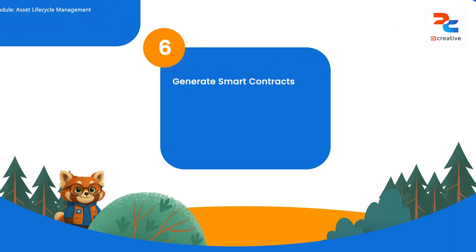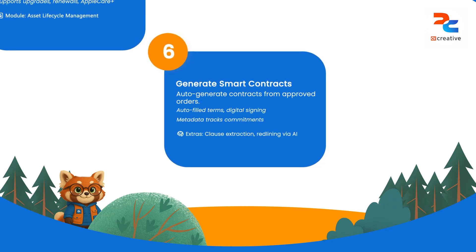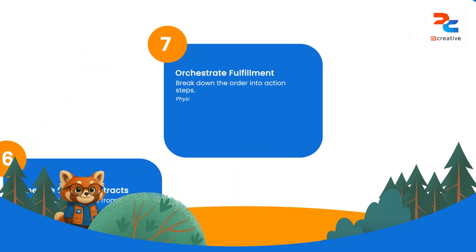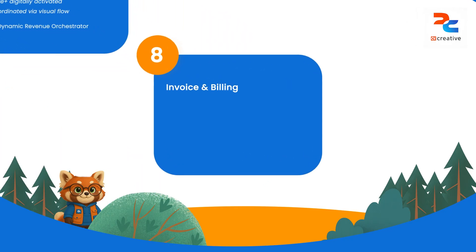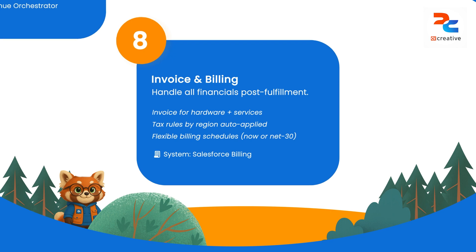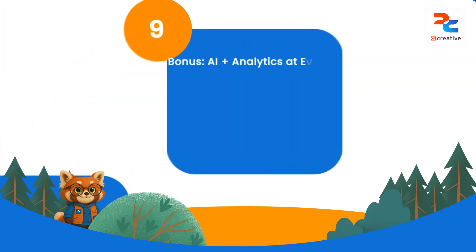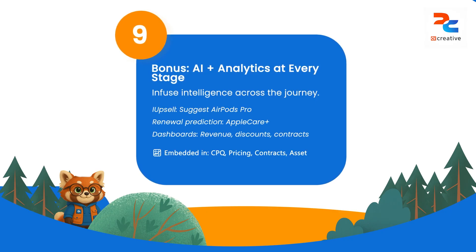After that, you have all your contracts being managed for that iPhone — AppleCare Plus contract signed, shipping information signed. Then you have your DRO, which fulfills that order: it checks that the iPhone is shipped from the warehouse, AppleCare Plus is applied digitally, and shipping and activation is enabled. Once delivered, you do invoicing management and billing — sending an invoice on the base product, tax calculated by region, and the billing schedule is triggered. Then you upsell that client using AgentForce capabilities, predicting the likelihood of renewal of AppleCare Plus. All of that is managed as part of the Revenue Cloud system.